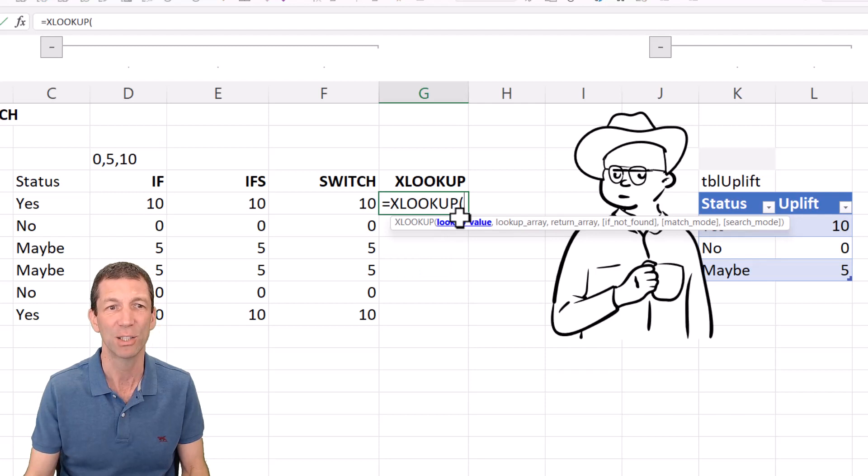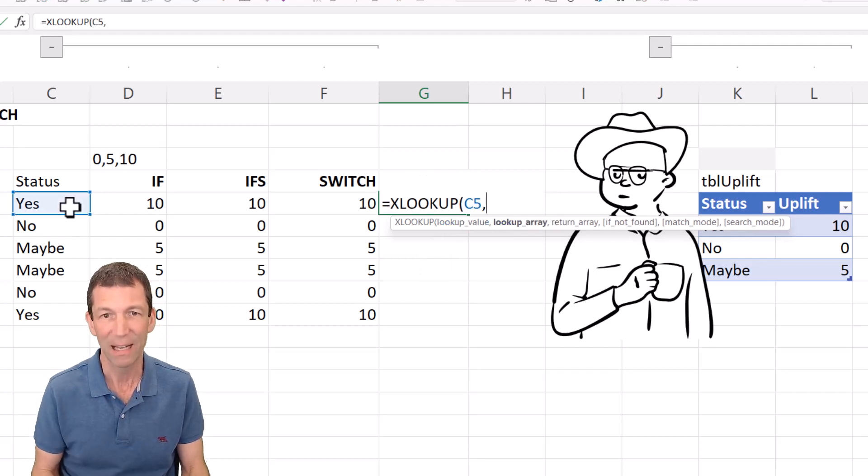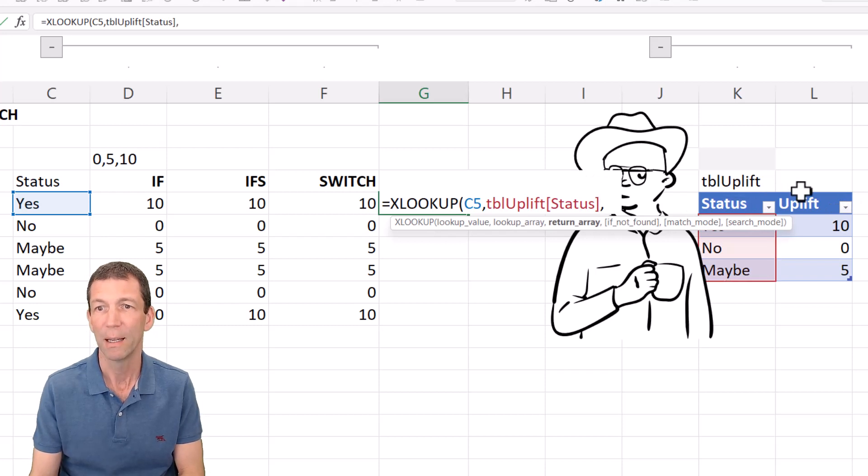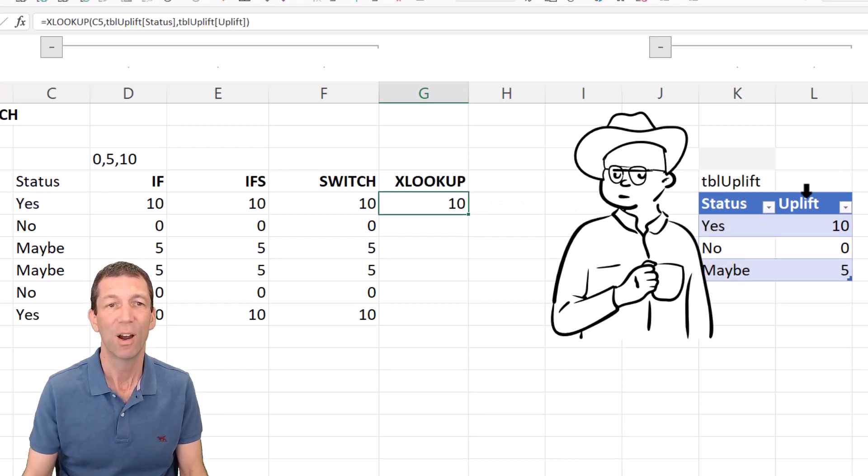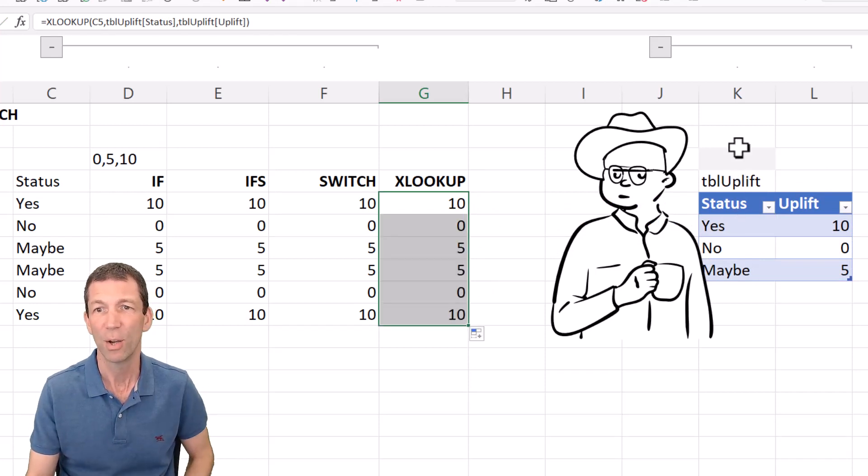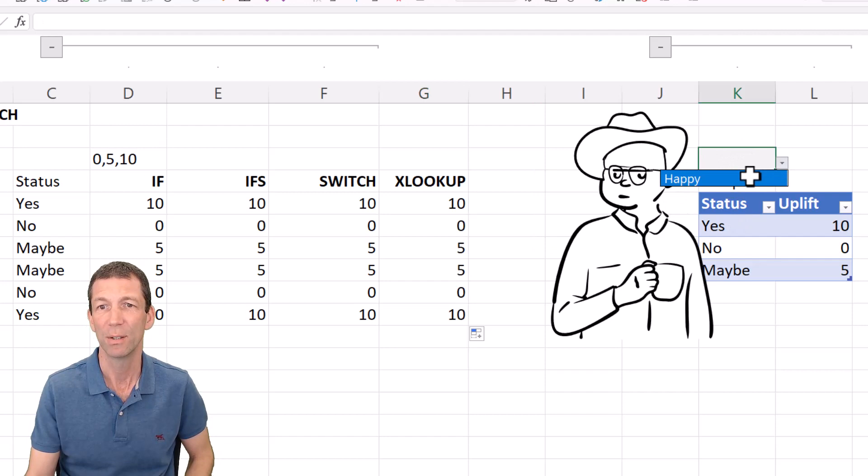So equals XLOOKUP, look up that value comma in this status column comma and bring back the uplift and just press enter. All right just easier, beautiful, you know I think even this person would be happy.